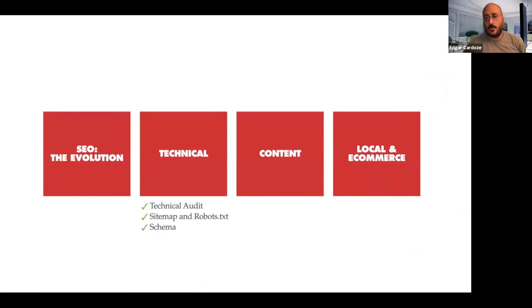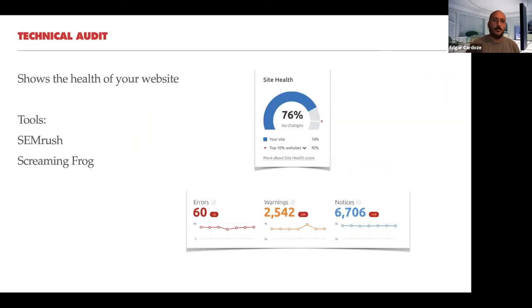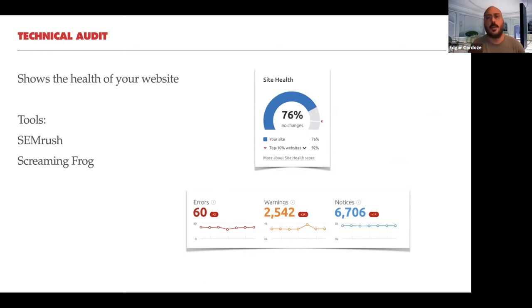On the technical side, we use tools like SEMrush and Screaming Frog. They're basically robot emulators — they mimic a search engine robot, crawl your website, and analyze its health. They report on errors like broken links and broken pages, warnings like having more code on the backend than content on the page, and notices.